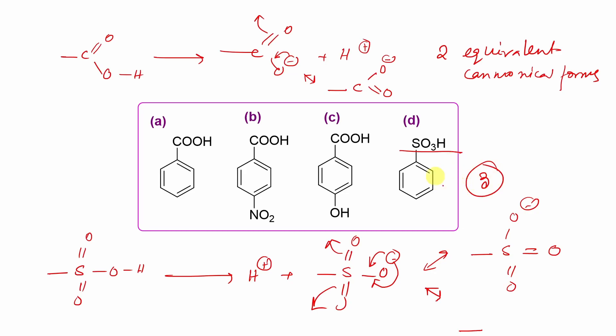More the equivalent, more the number of equivalent canonical forms, more is the delocalization of the conjugate base, so more is the stabilization. As I told some time before, more the conjugate base stability, more is the acidity.